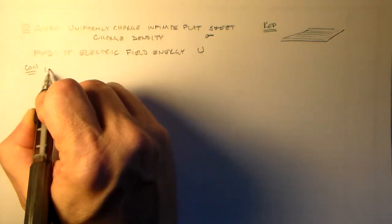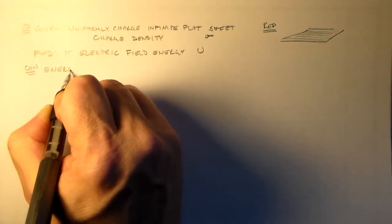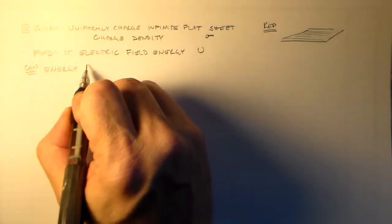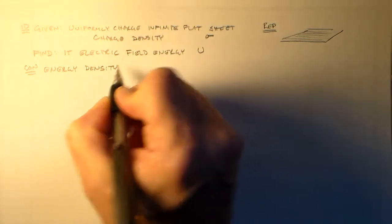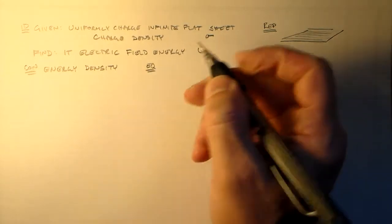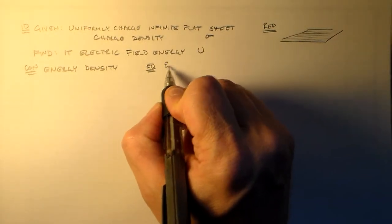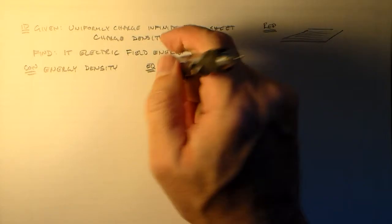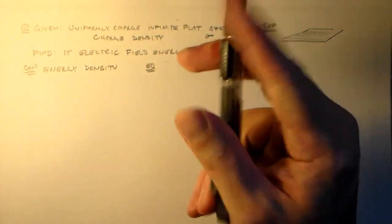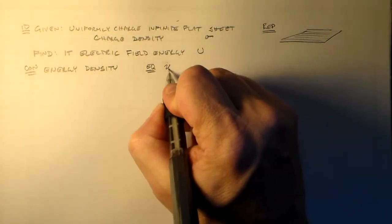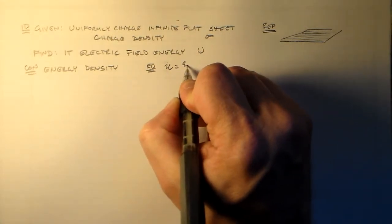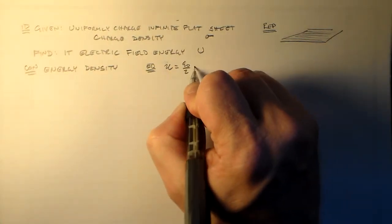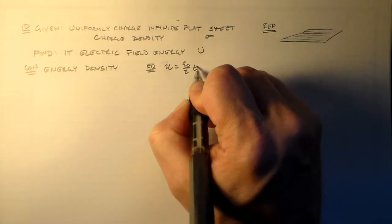And so our concept here is going to be the energy density. And the equation is epsilon naught over 2, little u, the energy density. Energy density, little u instead of big U, epsilon naught over 2, e squared.